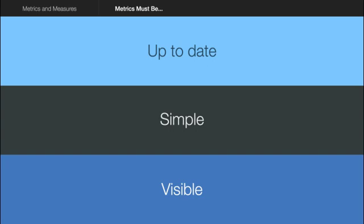You want maybe six to eight metrics — you don't want more than that. You want them simple and powerfully focused on your goals. Lastly, they must be visible. Make big visual charts of these key metrics, put them up on the walls, use thermometer drawings or anything you want, and let the teams find a way to make these metrics visible on a daily basis.